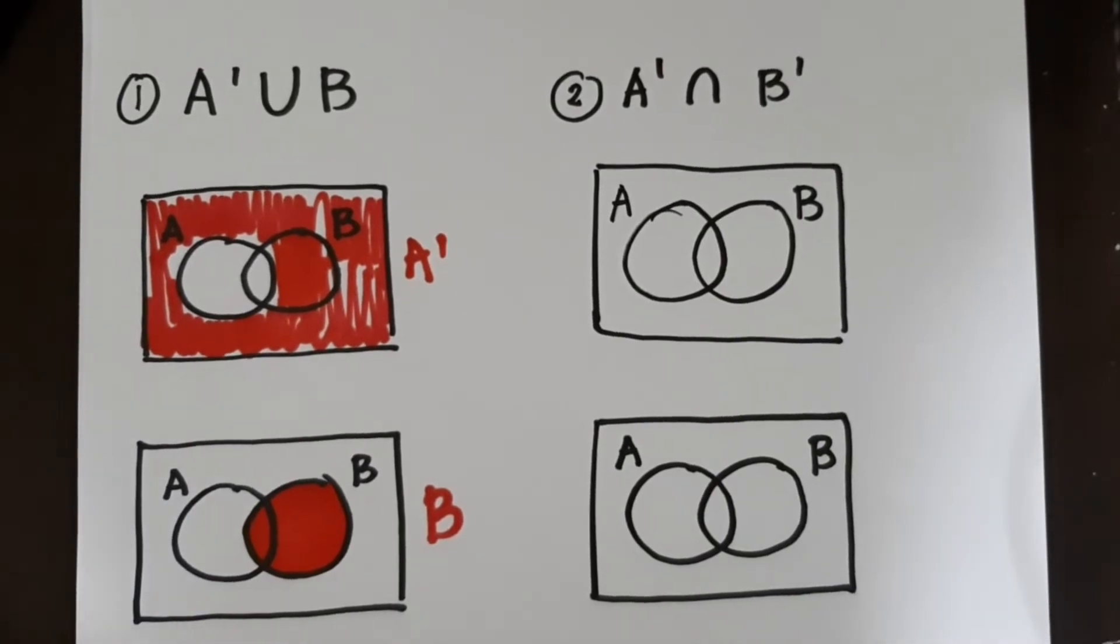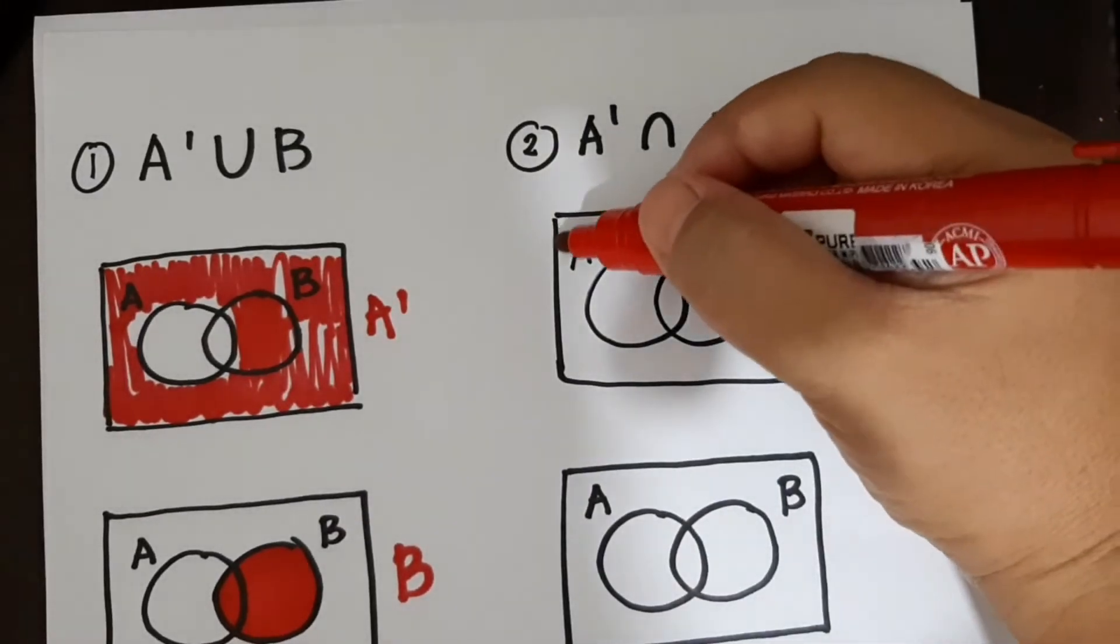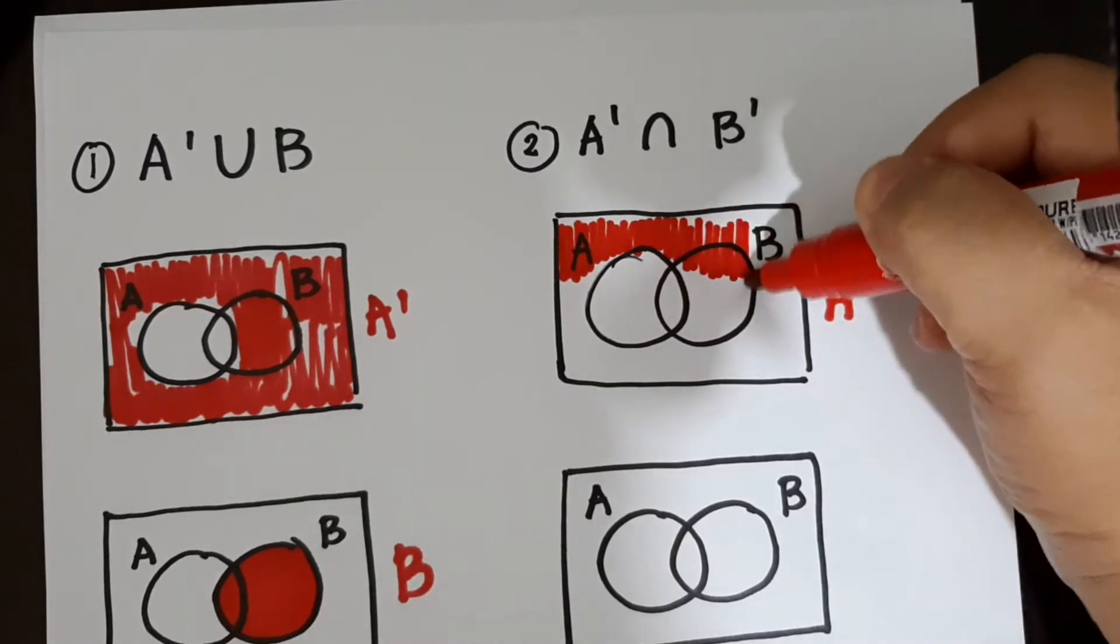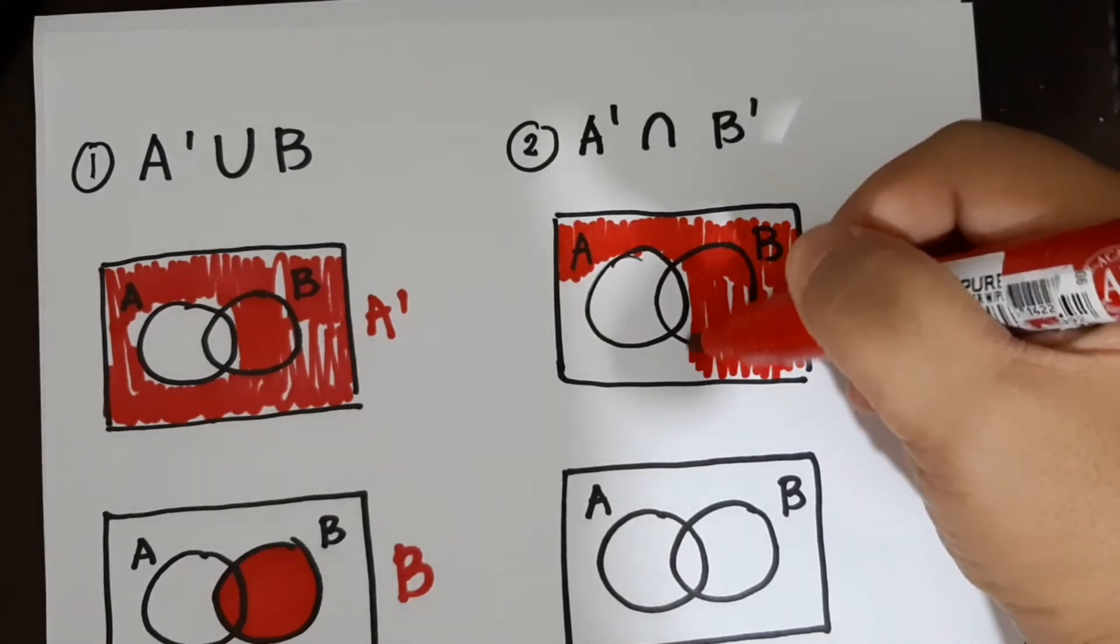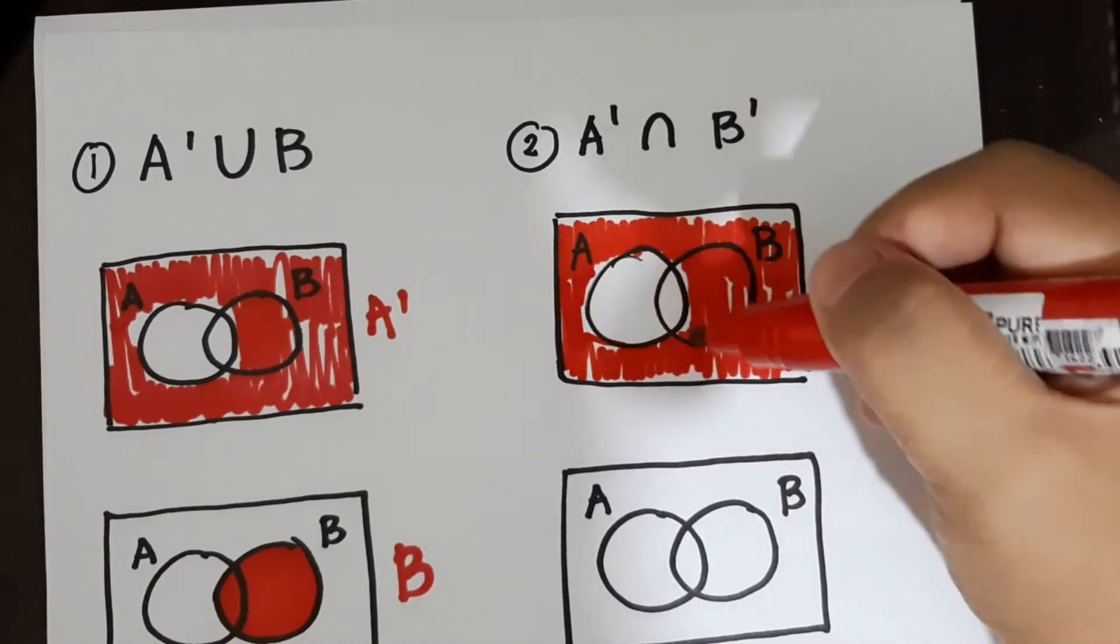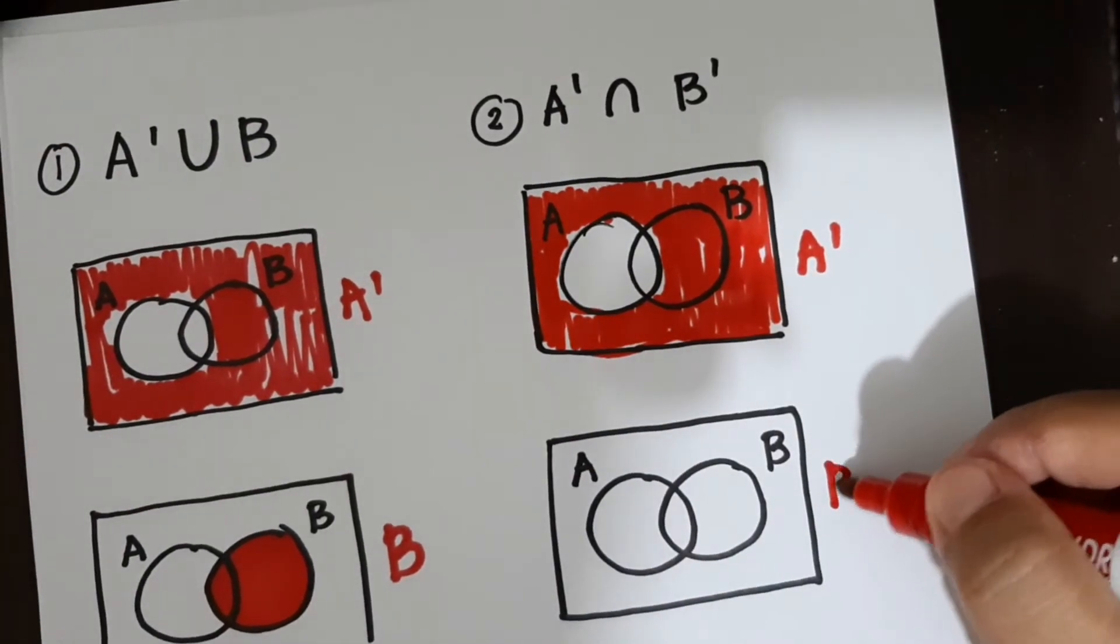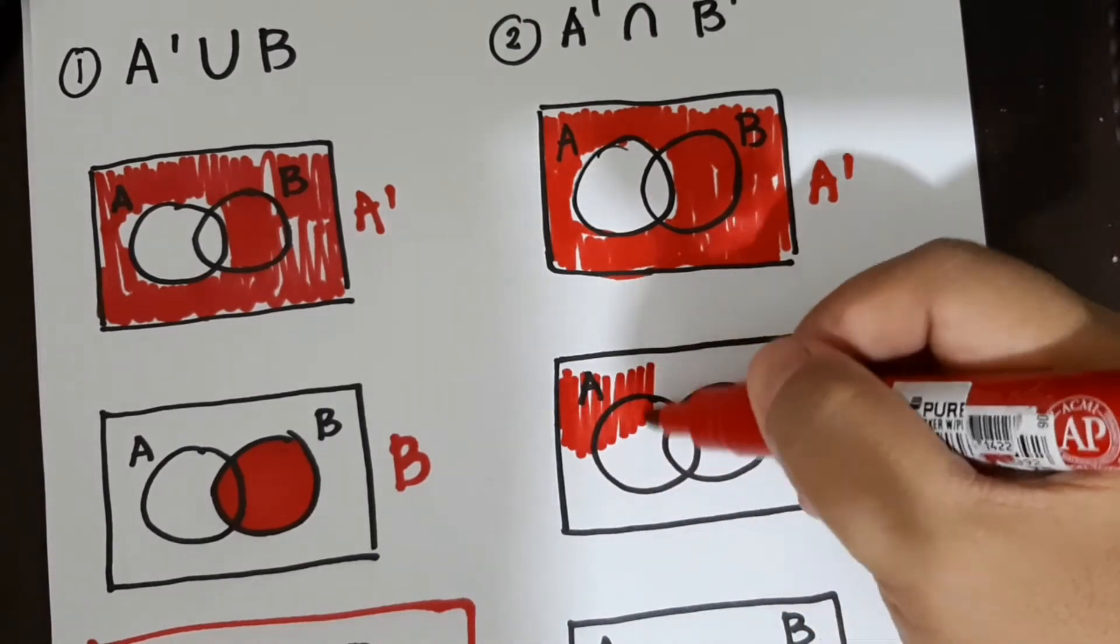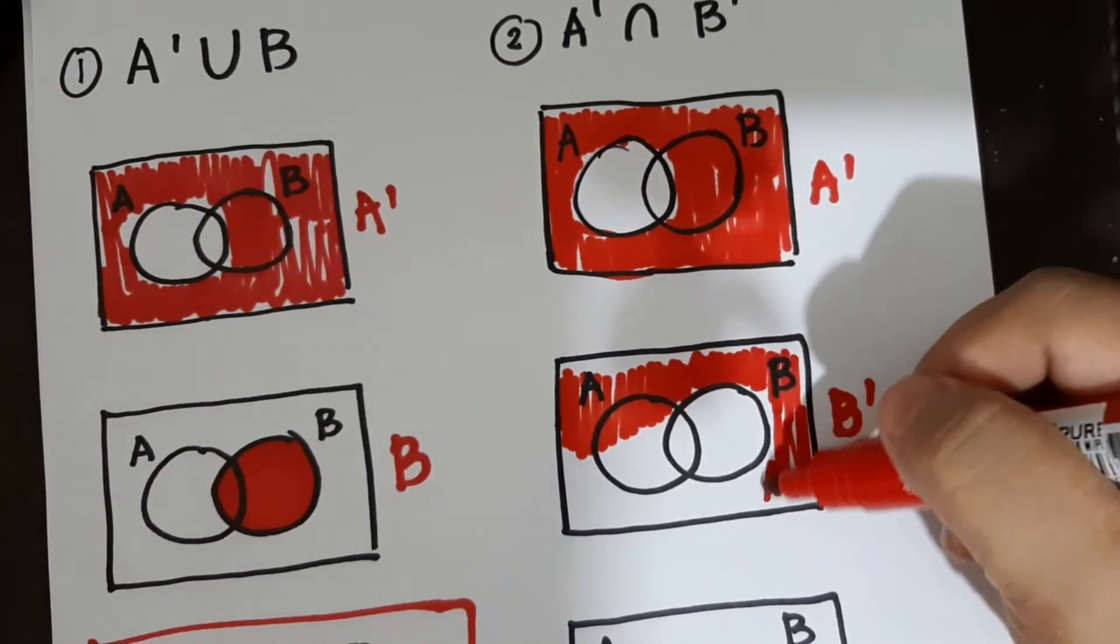Another problem is not A intersection not B. So upisa natin ulit sa not A. So sa not A, again, yung A lang yung walang shade.